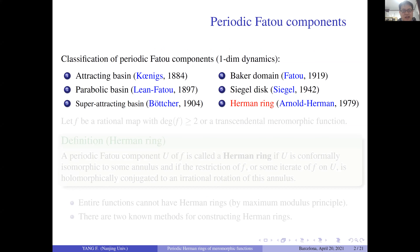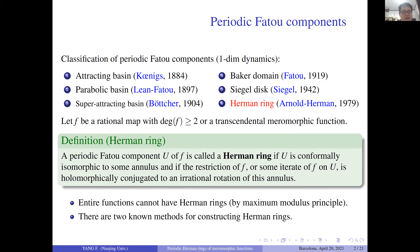Yesterday and today, they have introduced some basic concepts in complex dynamics, such as the classification of periodic Fatou components in one-dimensional dynamics. There are the following types of periodic Fatou components: attractive basins, parabolic basins, Siegel discs, Baker domains, Siegel discs, and Herman rings.